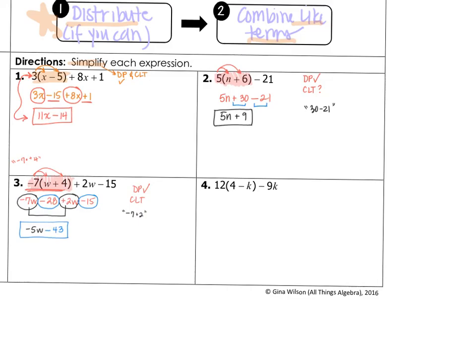Now, I'd like you to pause the video and try number 4 on your own. And then unpause the video so you can check your answer. After distributing the 12, we end up with 48 minus 12k. Bring down the minus 9k. And combine like terms of minus 12k and minus 9k to get minus 21k.